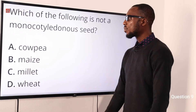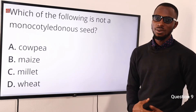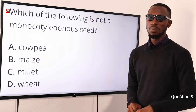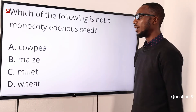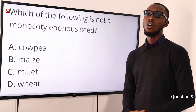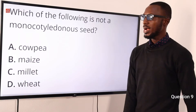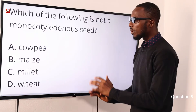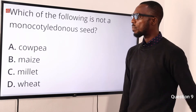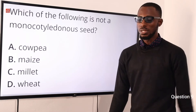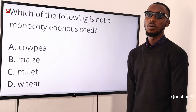Question 9. Which of the following is not a monocotyledon seed? Remember monocotyledons and dicotyledons are under angiosperms — flowering plants. Monocotyledon means one seed leaf. All cereals are monocots. Looking at the options provided, the exception is the cowpea. The cowpea is a leguminous plant — a legume. The correct option is option A for cowpea.